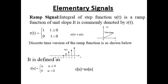Next, we study the ramp signal. The integral of the step function u(t) is the ramp function of unit slope, commonly denoted r(t), where r(t) = t when t ≥ 0 and 0 when t < 0. The discrete time version of the ramp function is r(n) = n when n ≥ 0 and 0 when n < 0.